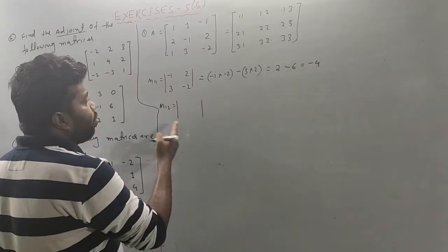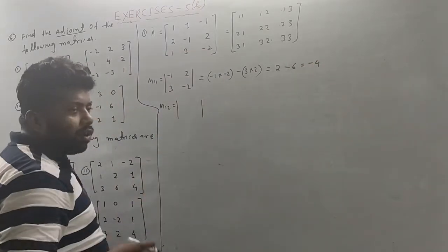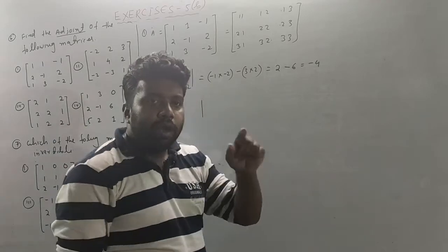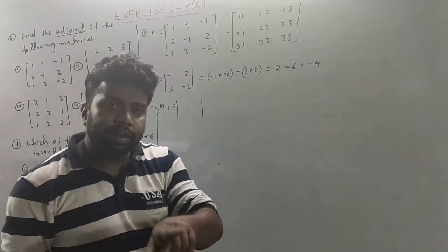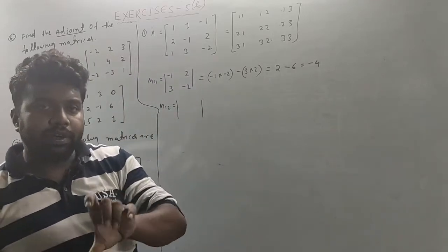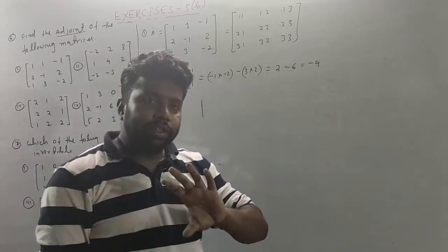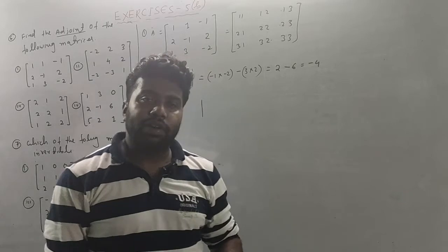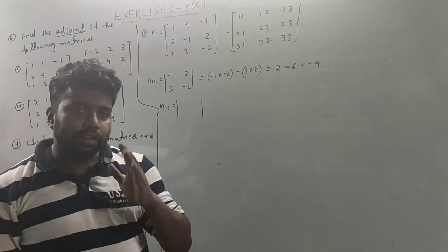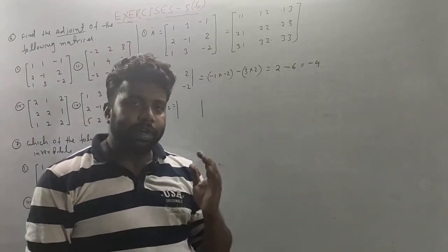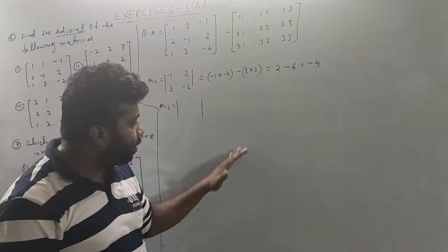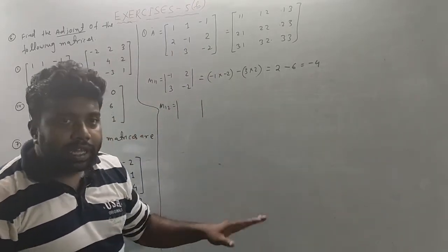So we have to find the cofactor. If you have the cofactor, you can proceed. Because if you have the cofactor, then the full adjoint of the transpose will be obtained. So you have to first find the minor, then find the cofactor.